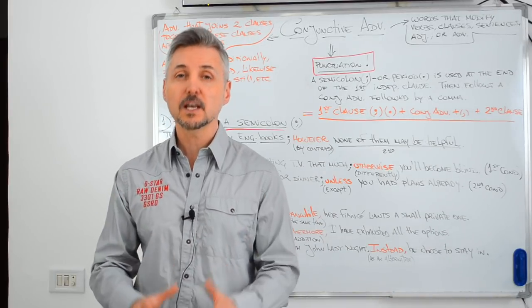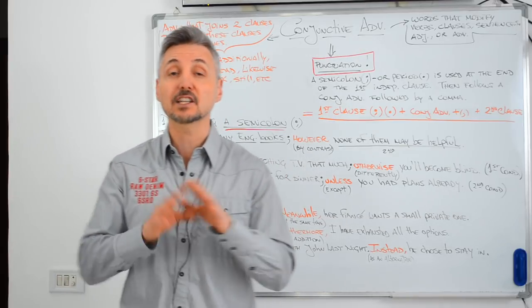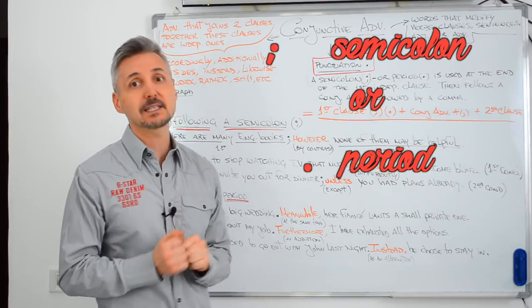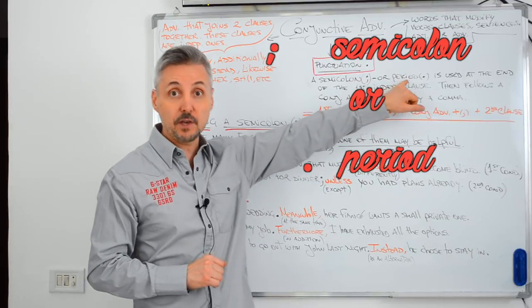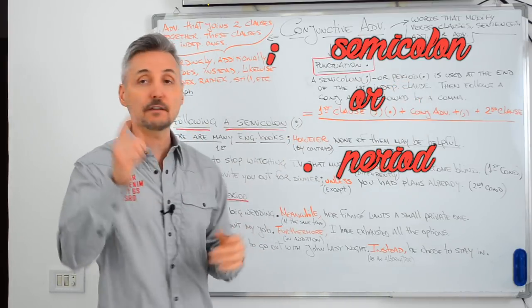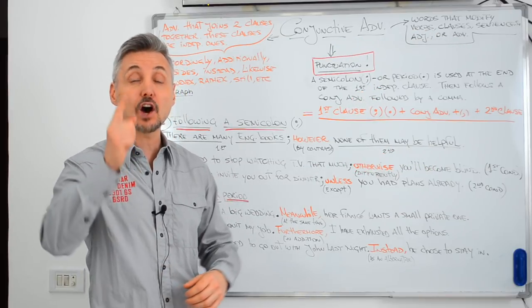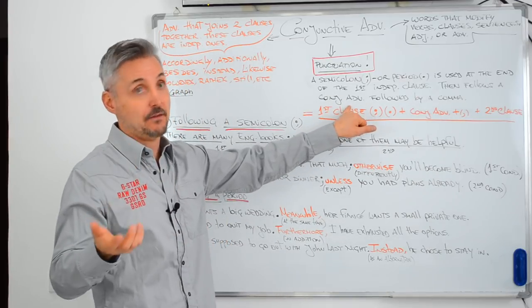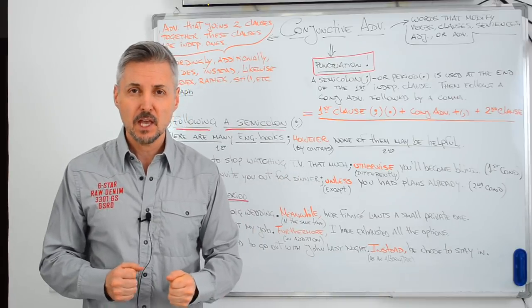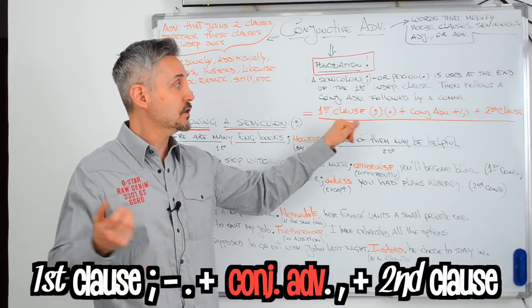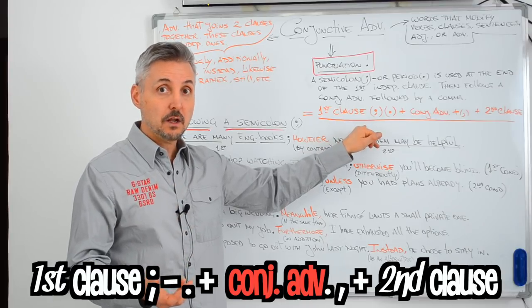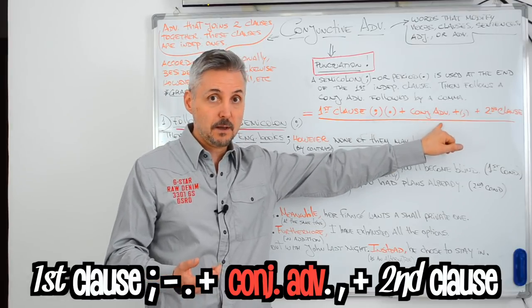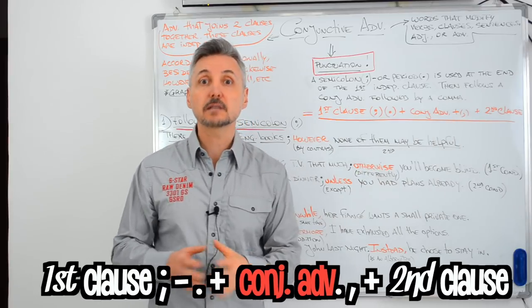When we talk about conjunctive adverbs, it's important to say that punctuation is extremely important. A semicolon or period — a semicolon is this sign — is used at the end of the first independent clause. Then follows a conjunctive adverb, followed by a comma. So the formula would look like: first clause, semicolon or period, plus conjunctive adverb, plus comma, plus second clause.